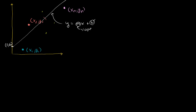Let me define what the error is. For each of these points, the error between it and the line is the vertical distance. So this is error 1, and error 2 is the vertical distance between that point and the line — the y-value of the point minus the y-value of the line. Error 1 equals y₁ minus the y-value on the line at x₁, which is mx₁ + b.